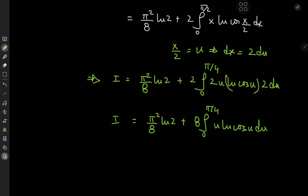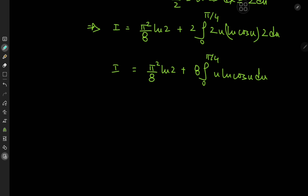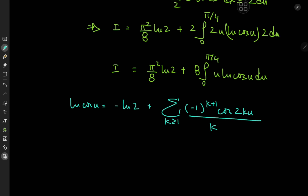This integral is a pretty interesting one in itself, and to solve it we need the help of a really cool infinite series expansion — the series expansion for log(cos x). We have log(cos u) = −log 2 + Σₖ₌₁^∞ [(-1)^(k+1)/k]·cos(2ku). Link in the description below for proof; I have a video proof on YouTube as well as a write-up on my Instagram.